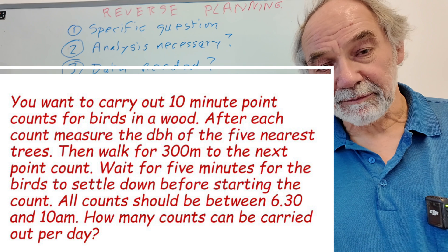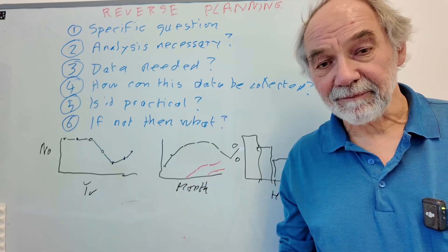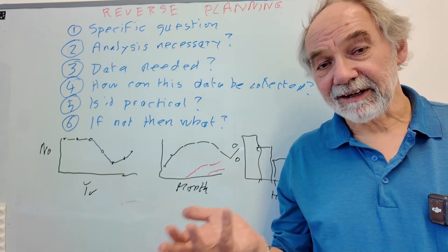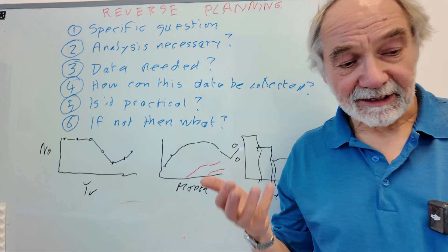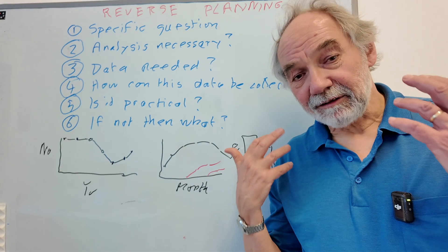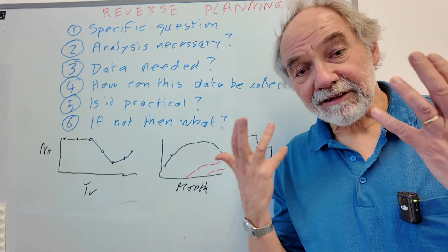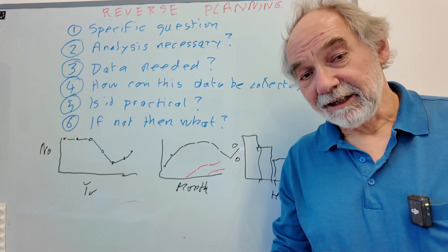So perhaps eight counts, seven or eight counts, allow a little bit of flexibility for other things to happen. So perhaps realistically, seven counts a morning. And you can then think then about the amount of data you can then collect over your season.